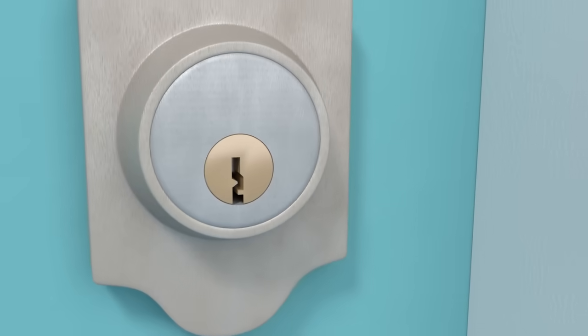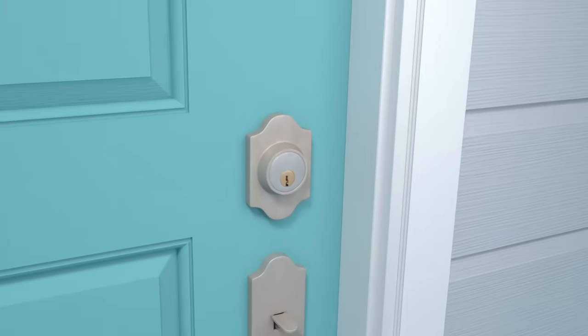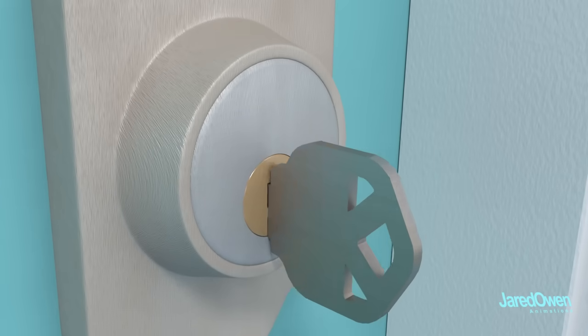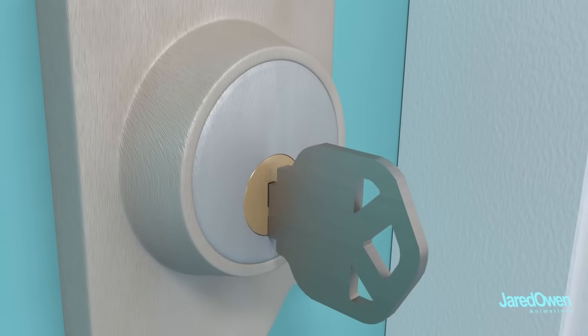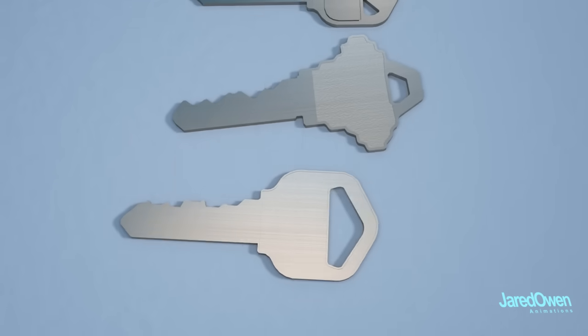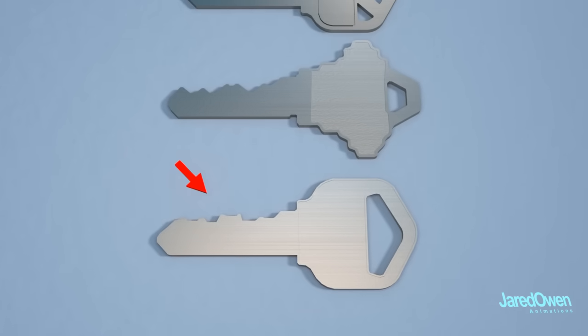When you open up a lock with a key, do you ever stop to think about what's going on inside? Only the correct key will open the lock. Why is that? Each key has its own unique shape. These ridges on the key have to match exactly with the lock for it to work.